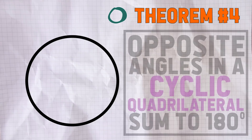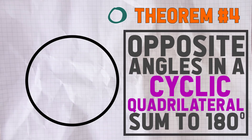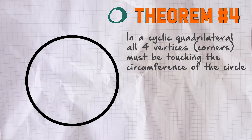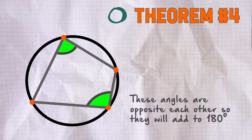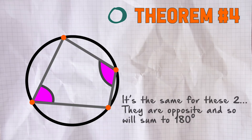Theorem number four: opposite angles in a cyclic quadrilateral sum to 180 degrees. A cyclic quadrilateral is a quadrilateral where all four vertices or corners are touching the circumference of the circle. And if you have a cyclic quadrilateral, then the opposite angles will add to 180 degrees, just as these ones here are showing.